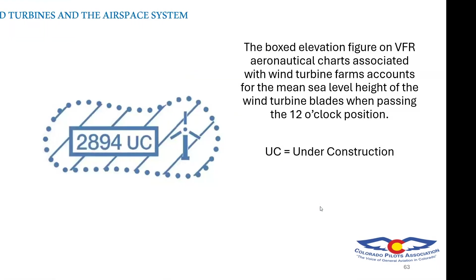The boxed elevation figure on VFR aeronautical charts associated with wind turbine farms accounts for the mean sea level height of the wind turbine blades when passing the 12 o'clock position. I was under the impression it was AGL — I'll have to double check that. UC means under construction.